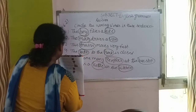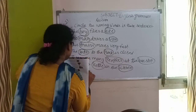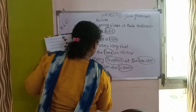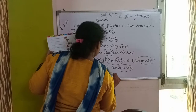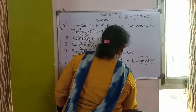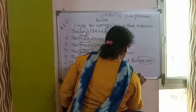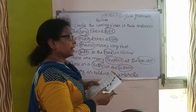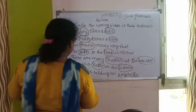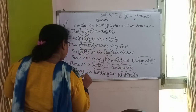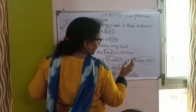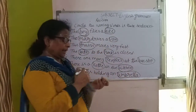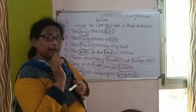The boy is holding an umbrella. लड़के ने umbrella को hold कर रखा है. तो boy क्या है? एक लड़का है — यह naming word है. और umbrella क्या है? एक thing है. तो हमने boy और umbrella को circle कर दिया.